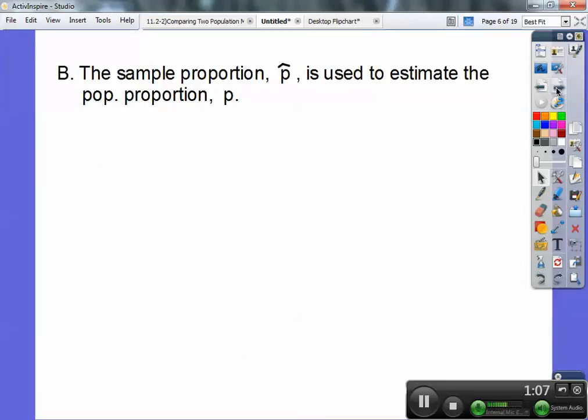So section B, the sample proportion, which is P-hat, is used to estimate what your population proportion, P, is. So it's like your population mean is mu, and we had the sample mean, which was X-bar. This is our sample proportion, which is P-hat, to estimate our population proportion, P.